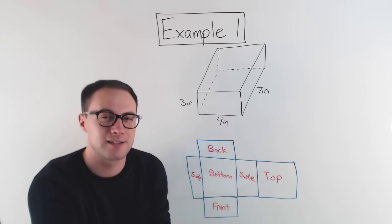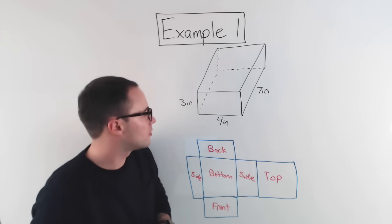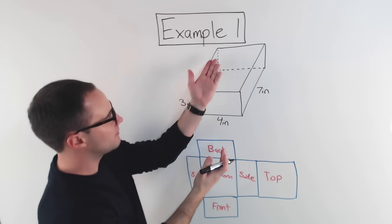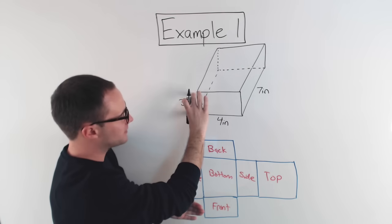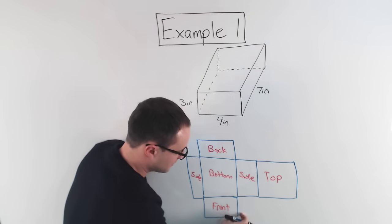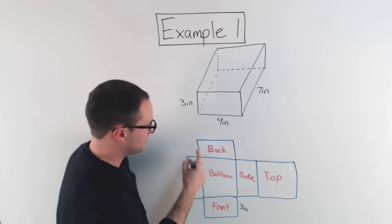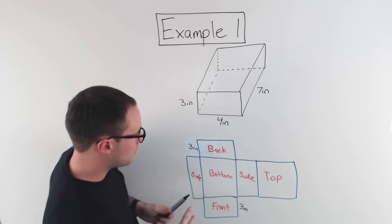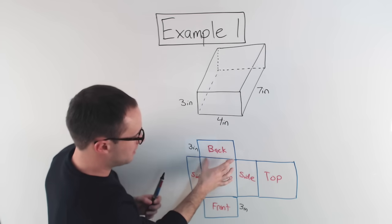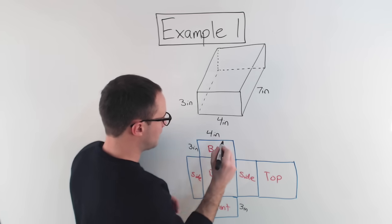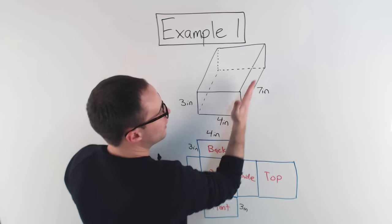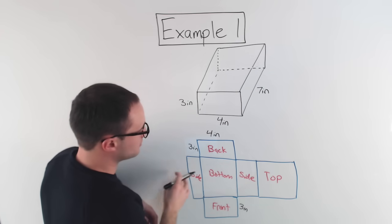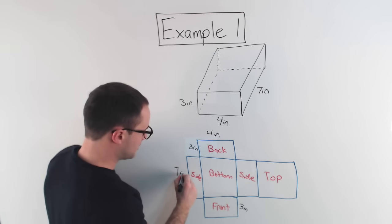So there's my net, but I'm missing the lengths. This length here is the same as the height of the front and back, so I'll label that three inches — three inches, three inches, three inches. This length is four inches — four, four, four. The length going back on the side was seven inches — seven inches, seven inches, seven inches along those faces.